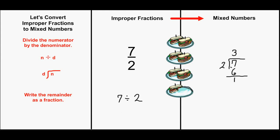Our remainder is 1 half. 3 and 1 half is the mixed number that has the same value as 7 halves.